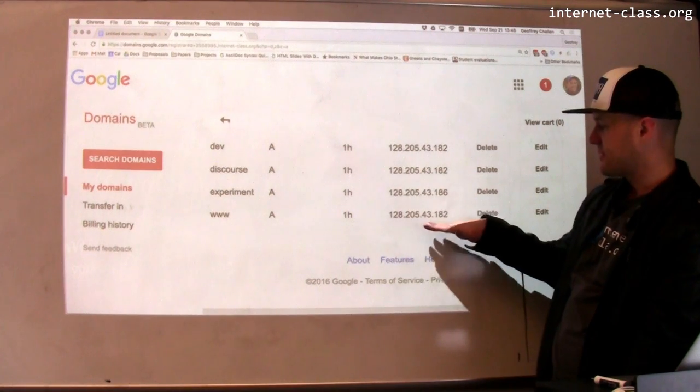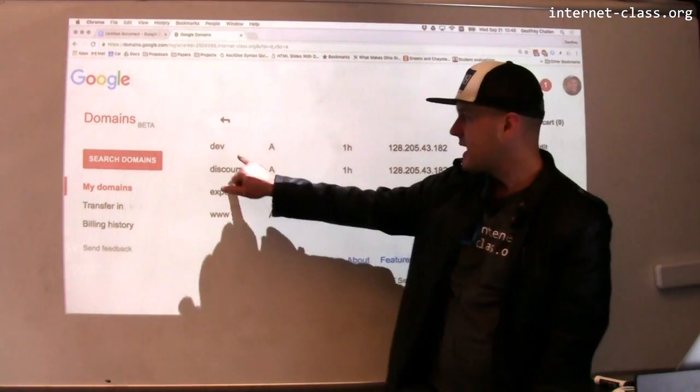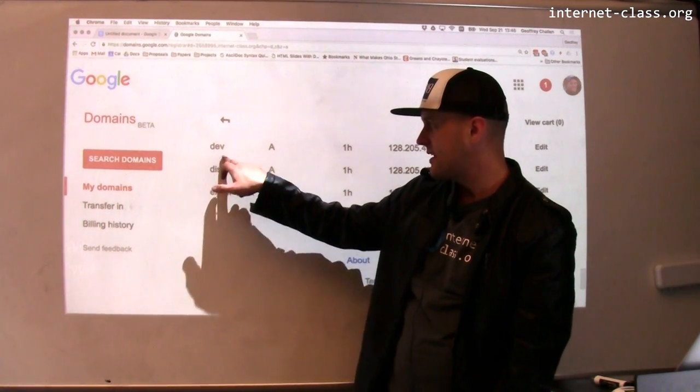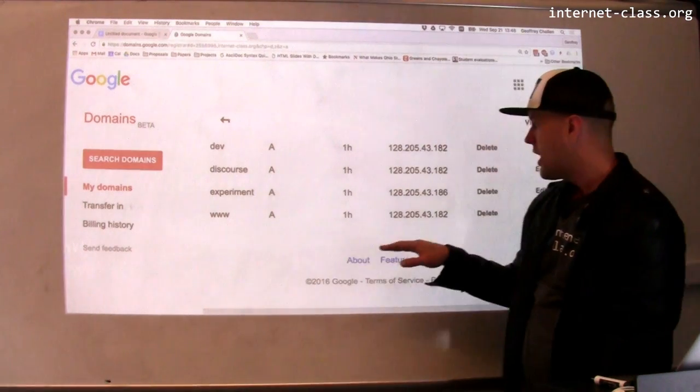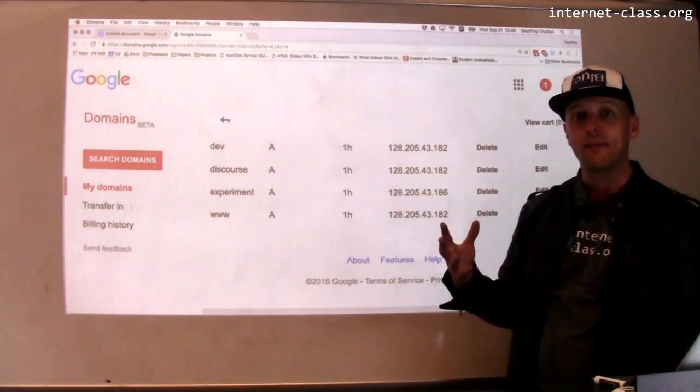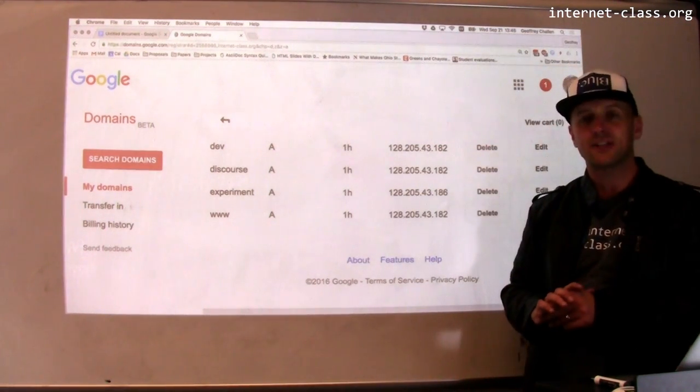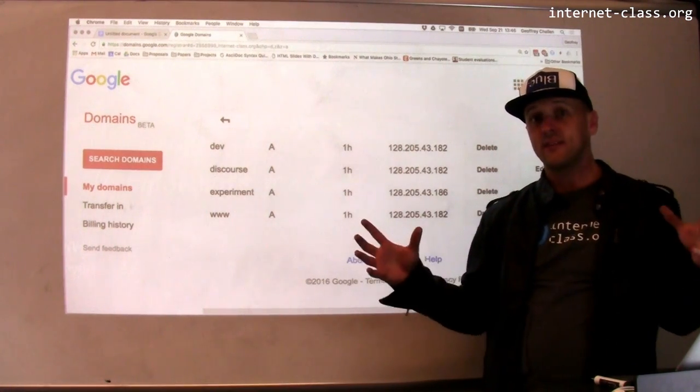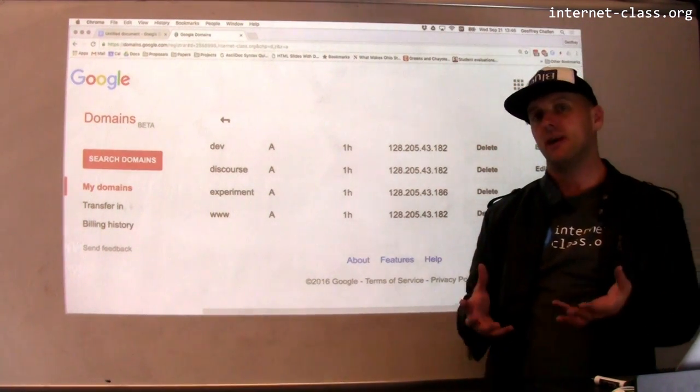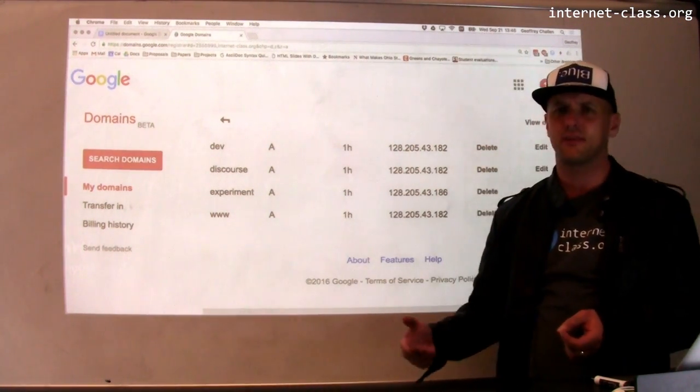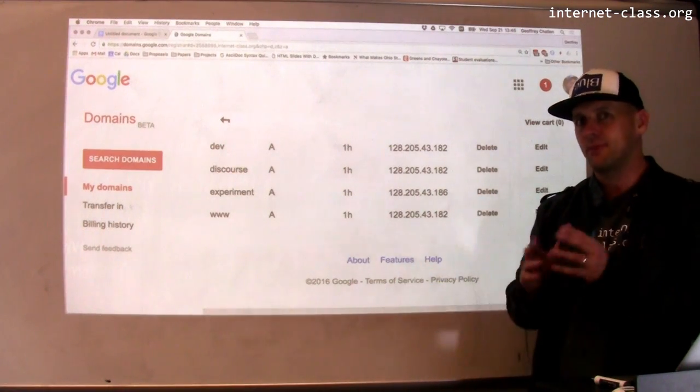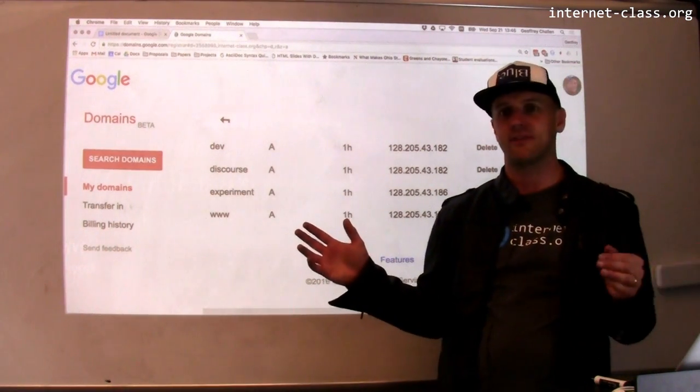And one thing that's interesting that you'll notice is that three of these host names, dev, discourse, and www, are all pointed at the same machine. And this is something that I can do. I can actually set up a web server to serve different sites from the same physical machine. If I needed a new machine for every website in the world, that would be a problem. And we'd probably have even fewer IP addresses that would be available.